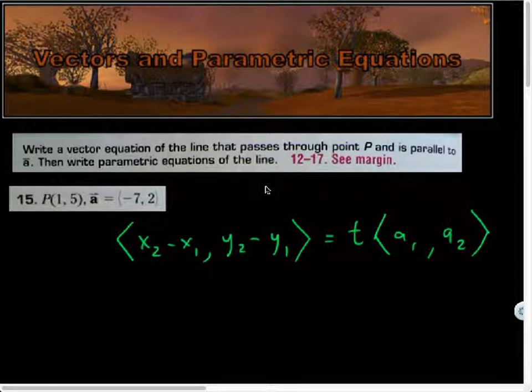Greetings and welcome. We've been talking about vector and parametric equations. Last night's quest was on page 524, and specifically here's question 15 for us to look at. It says, write a vector equation of the line that passes through the point P and is parallel to vector A.